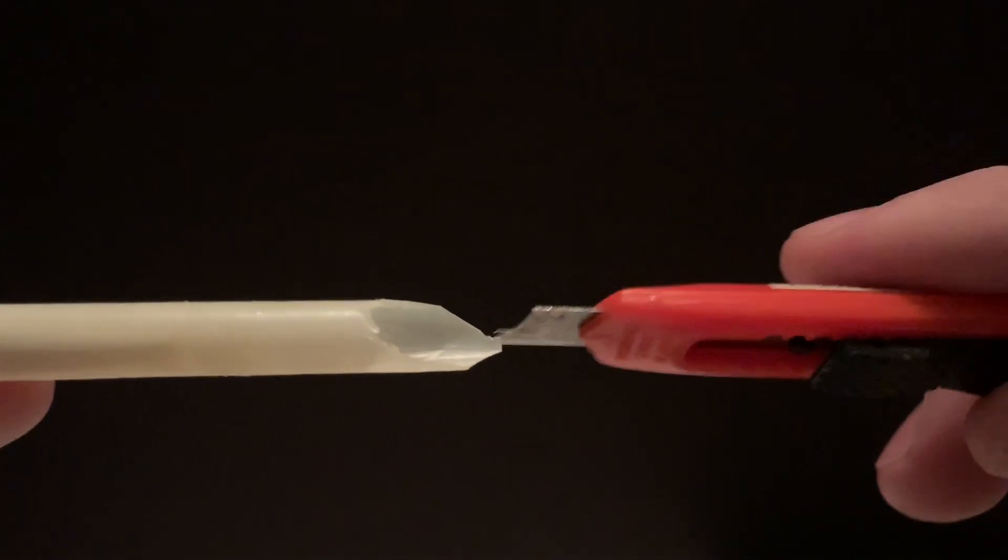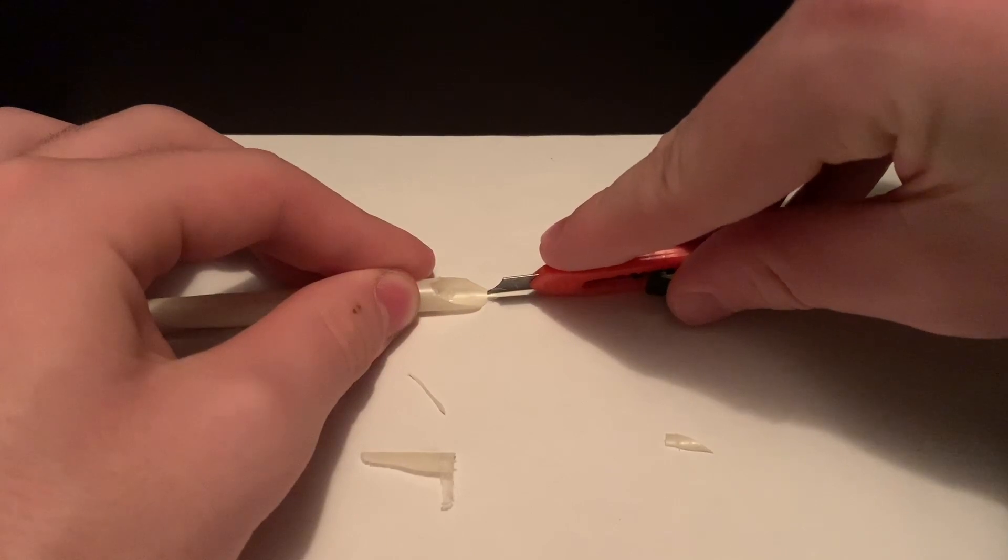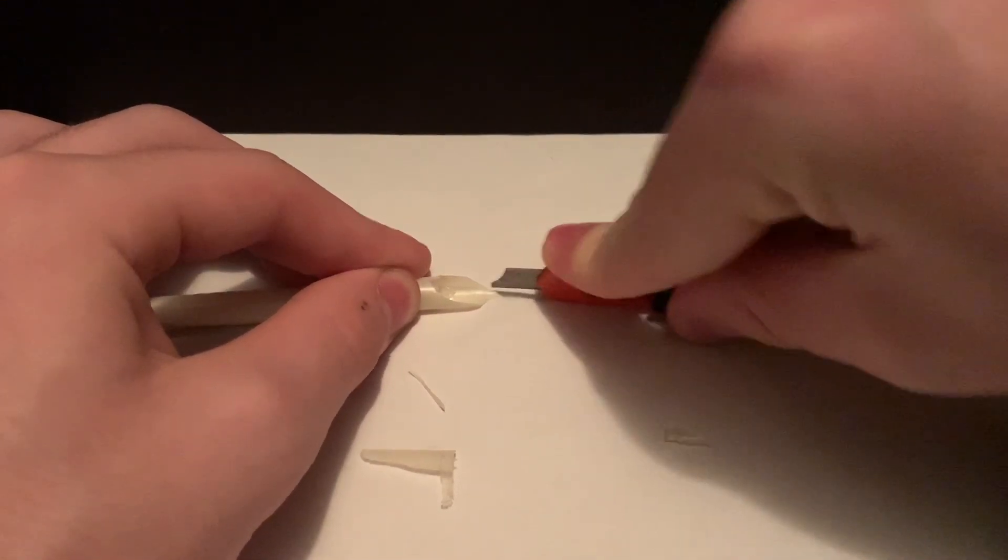Then we're going to make a cut down the middle, and this is to draw up the ink. In this case, the blade was a bit too thick, so it didn't turn out the best, but I'm sure you all could do better.